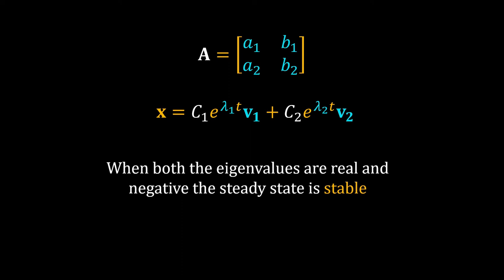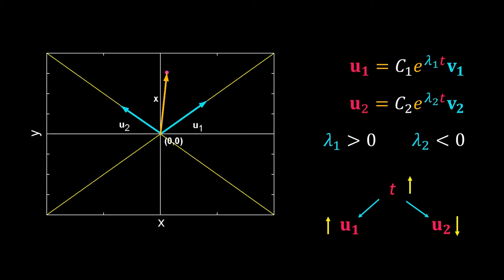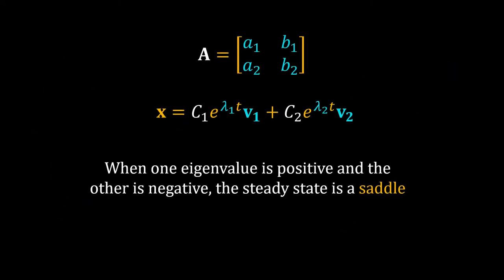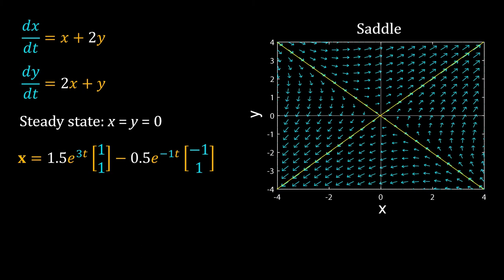With a little imagination you can show this would be true even for higher-dimensional systems. Now consider a system with one eigenvalue negative and the other positive. With time, one vector will shrink and the other will grow. One vector pulls the system towards the steady state and the other pushes it away, so eventually the system will move away from the steady state at zero. The phase portrait of this system is called a saddle.